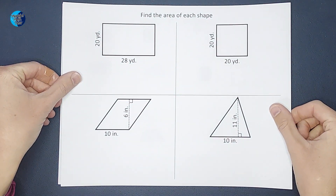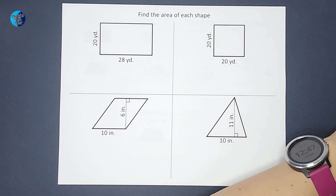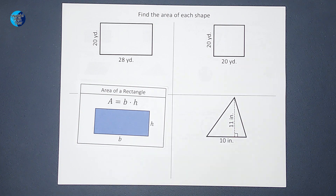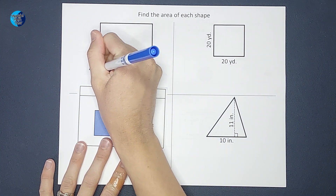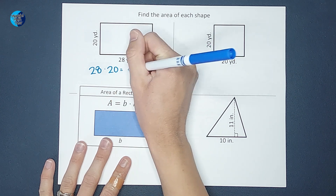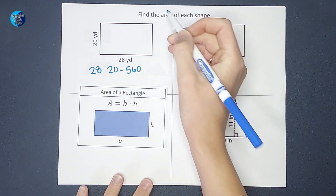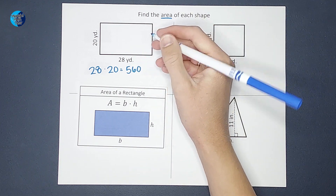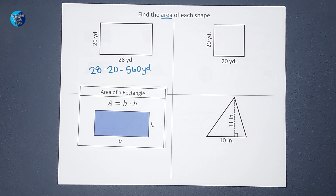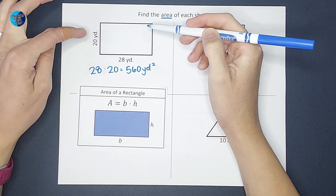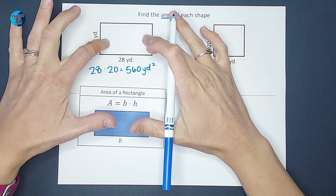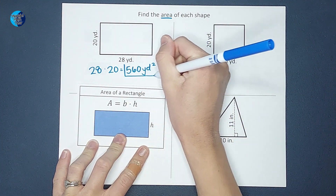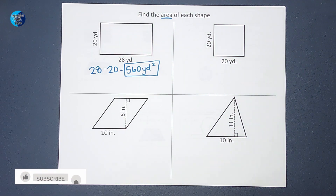We are going to start with the rectangle. The area of a rectangle is base times height. My base here is 28 yards and my height is 20 yards, so we're going to do 28 times 20, which gives me 560. With all of these, since we are doing area, we always need to pay attention to our units — it's not just yards, it's yards squared. If this were a room 20 yards by 28 yards, we're figuring out how many one-yard-by-one-yard squares fit inside.